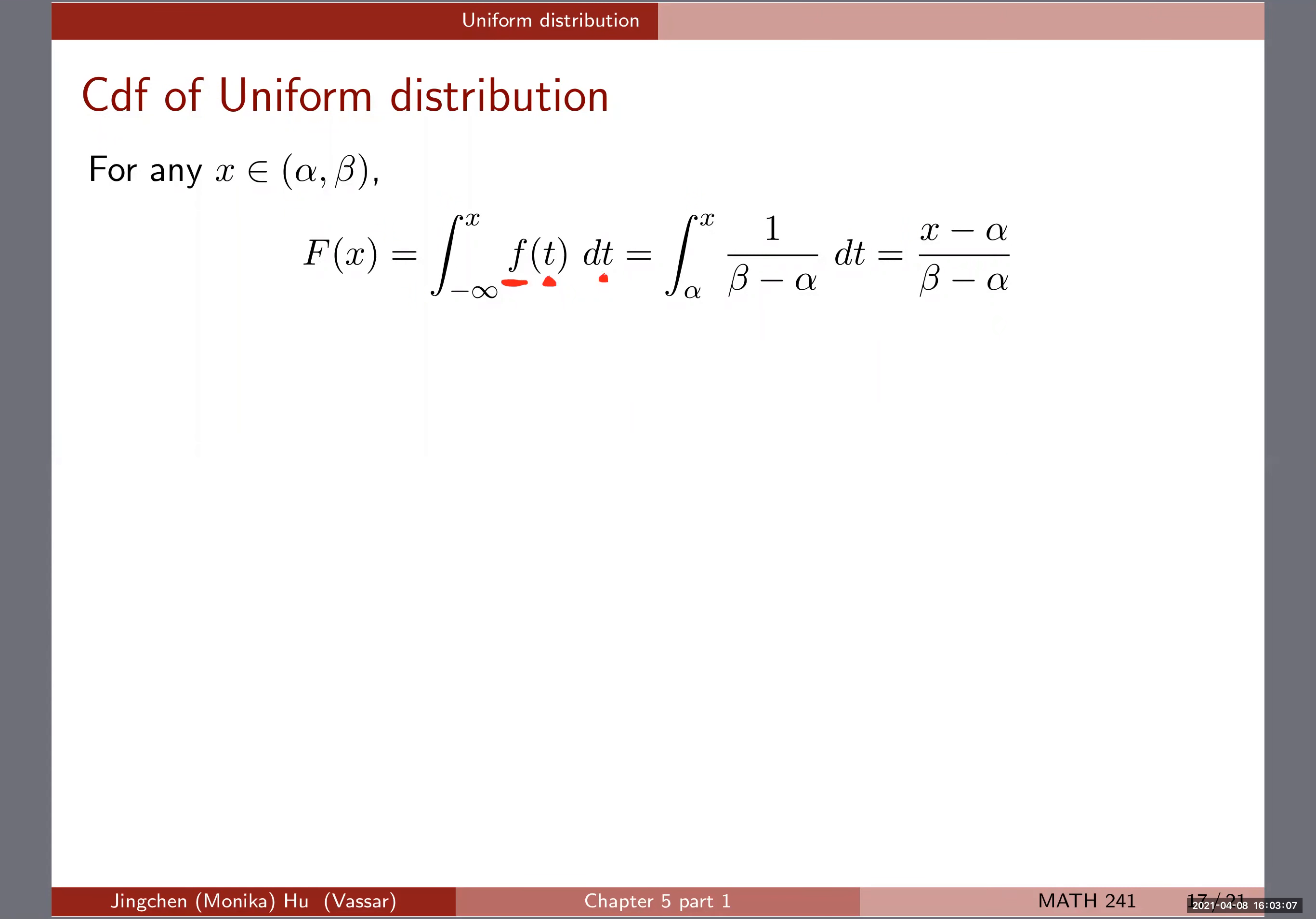So the CDF function F(x) is integrating up to X itself, using a dummy variable t. So f(t) dt, integrating from negative infinity to x. If x is in this particular range, it's going to be integrating from the lower bar, which is alpha, because everything below alpha we know that f(t) is zero by definition of the PDF earlier. So we're integrating this f(t), which is the constant one over beta minus alpha, integrating it from alpha to x. And then if we do the math right, you will see that this is the CDF if x is in the range of alpha and beta.